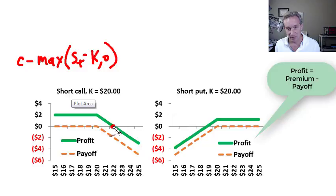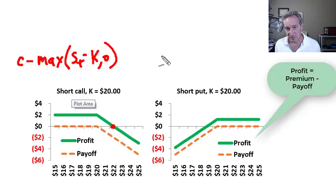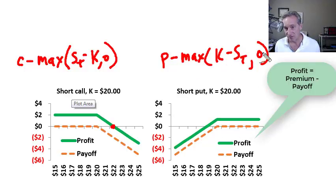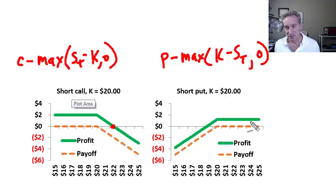Their break-even is also at $22 for the short call. For the short put, looking at the profit diagram, we can see the premium is smaller — closer to a dollar than $2 in this case. Their profit is the initial premium they collect minus the contingent payoff they may need to make if the future stock price is less than the strike price. The short put is hoping the future stock price is greater than the exercise price so there won't be a payoff and profit will just be the upfront premium collected. My key point is to distinguish between payoff — the future cash flows — and profit, which includes the income from writing the options.